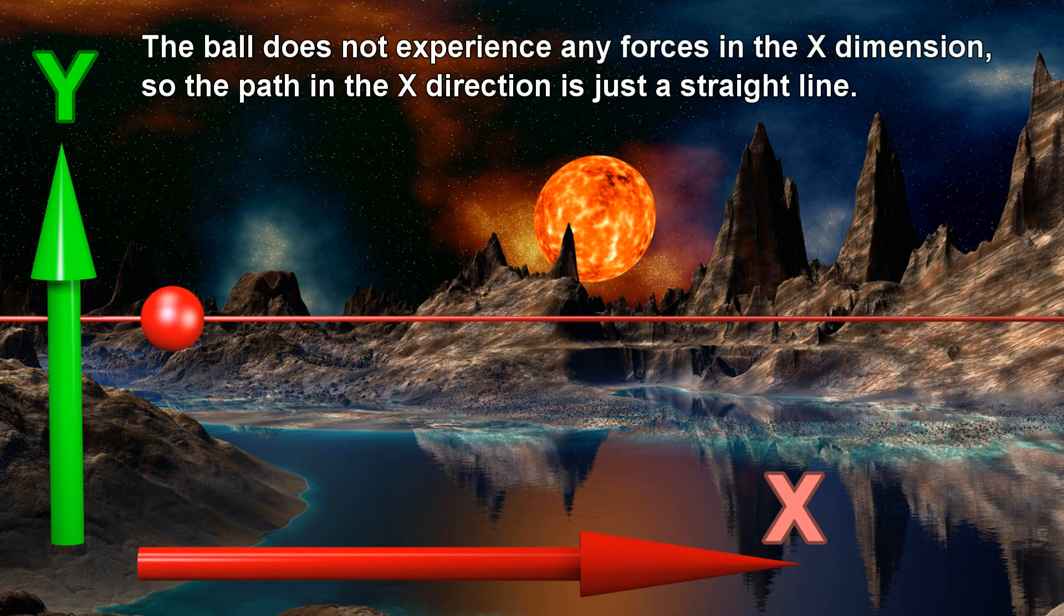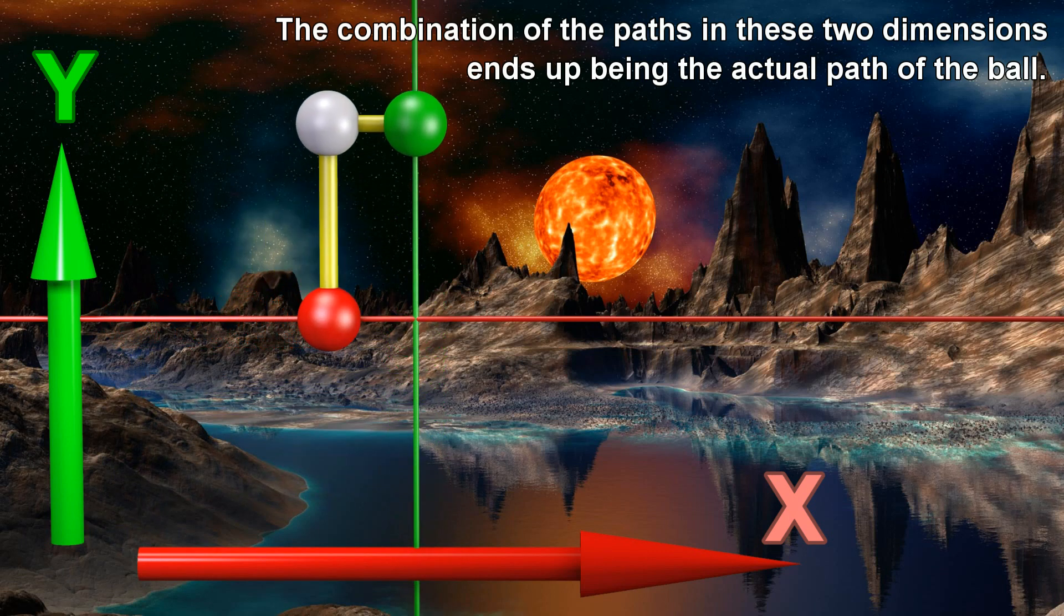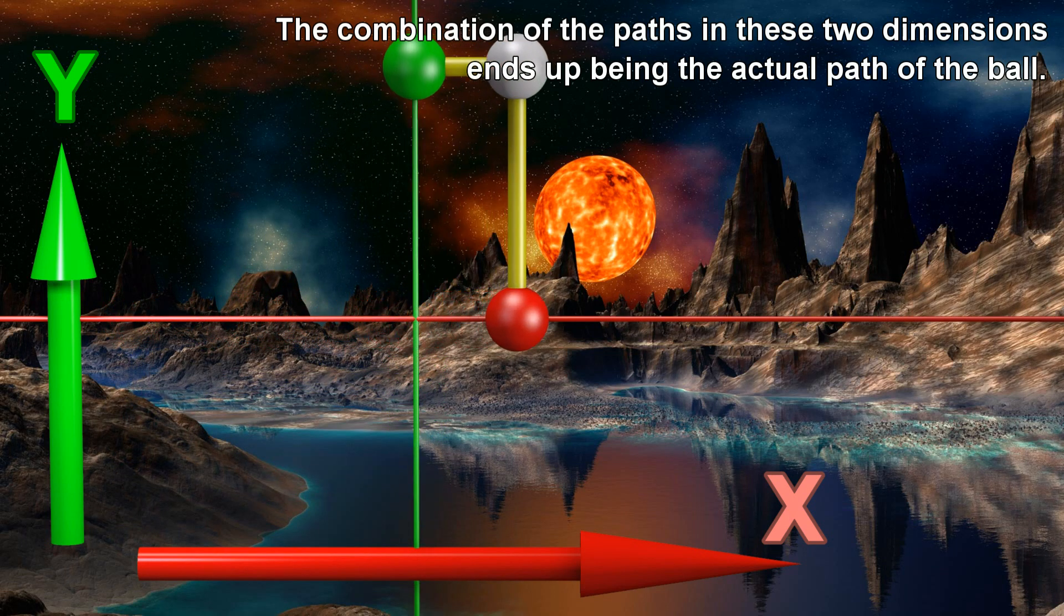The ball does not experience any forces in the x-dimension, so the path in the x-direction is just a straight line. The combination of the paths in these two dimensions ends up being the actual path of the ball.